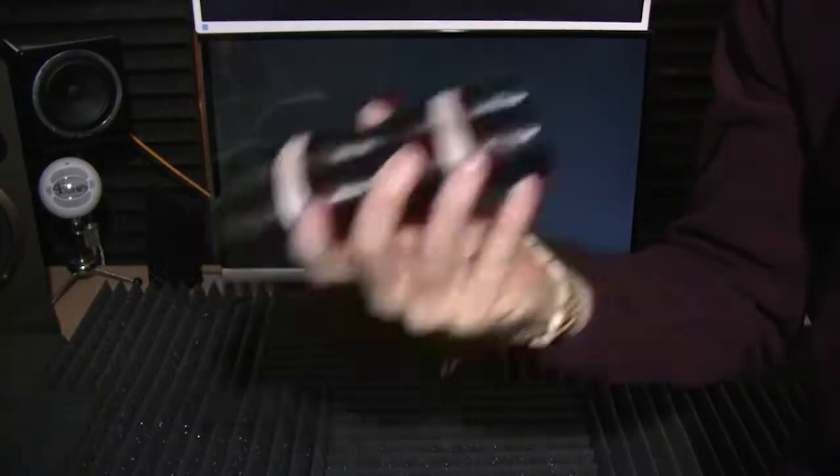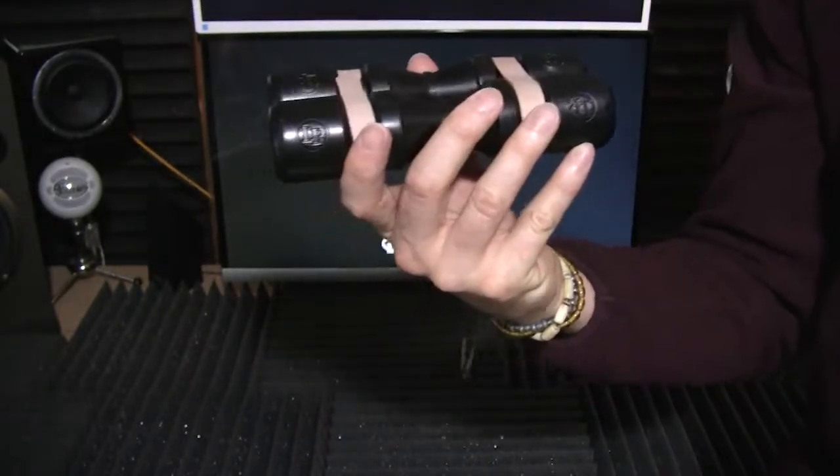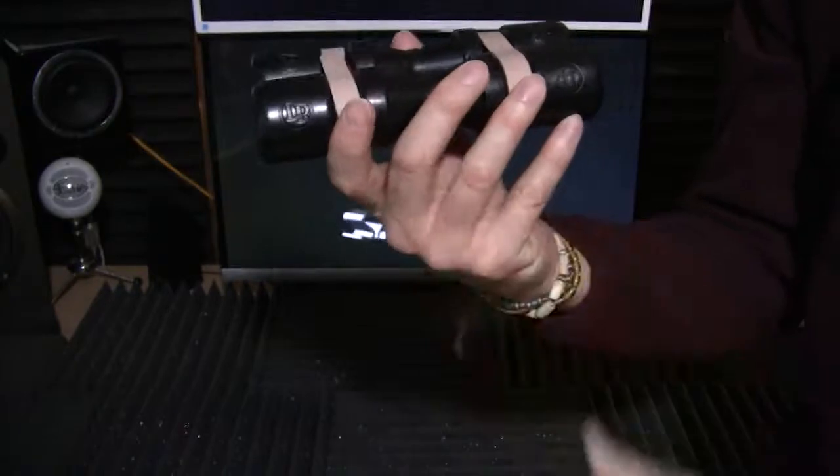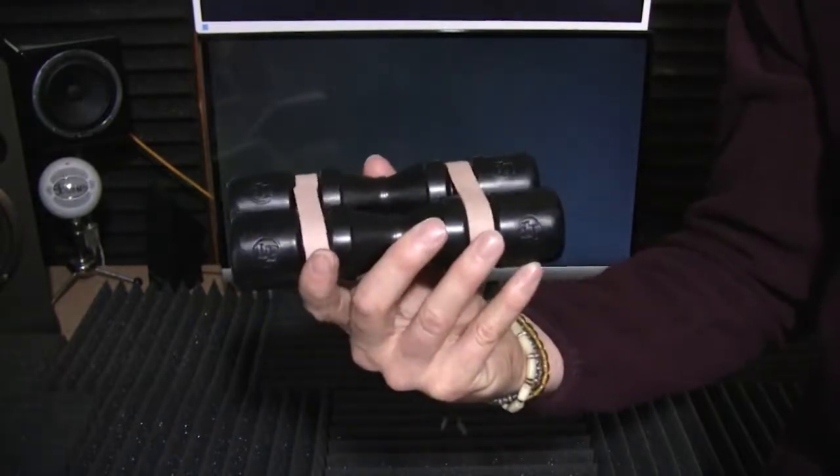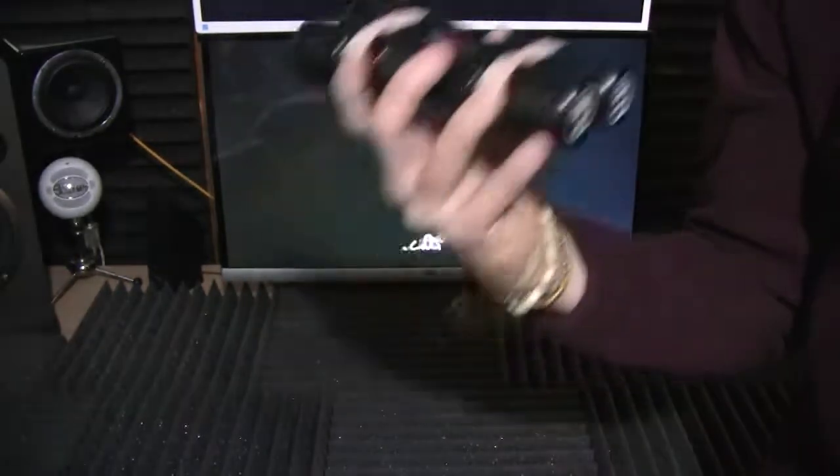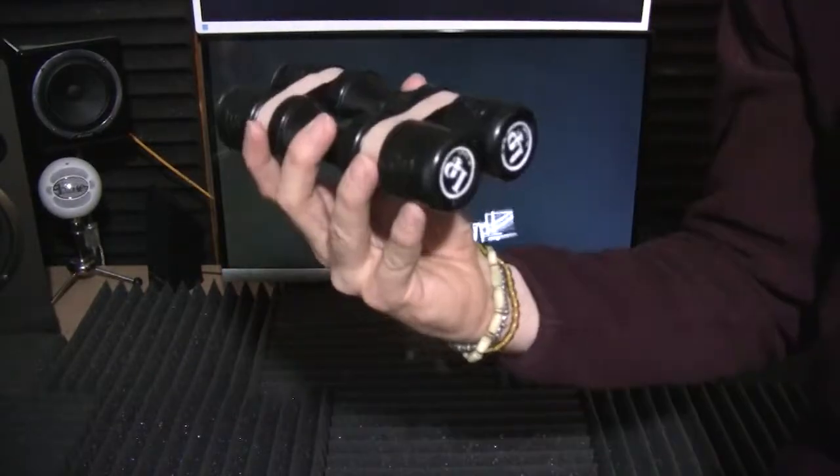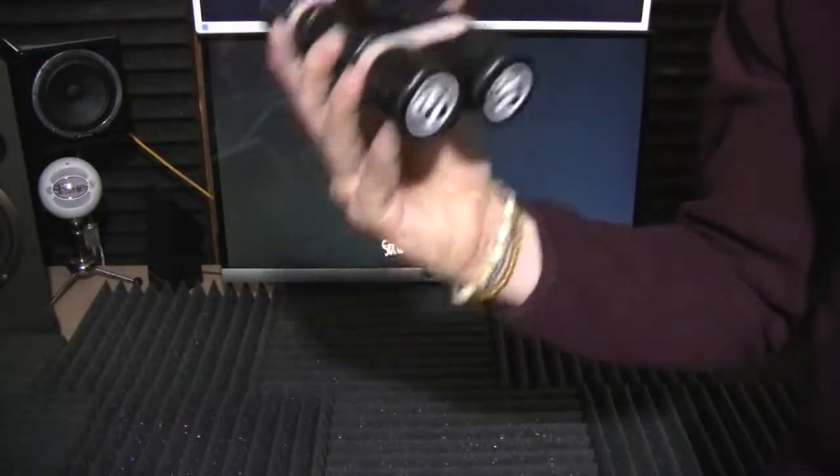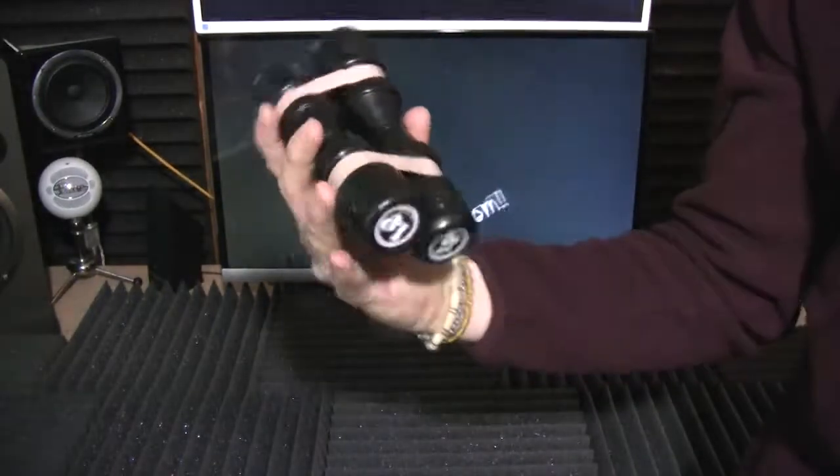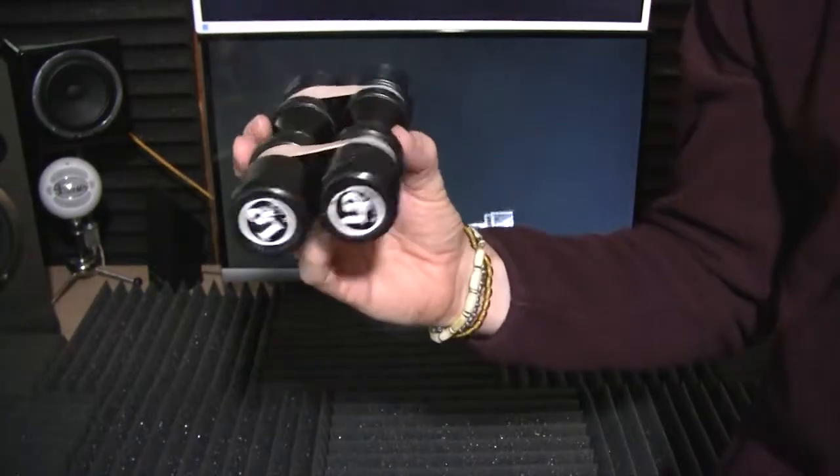Now, if I hold it lengthwise, you get a lot more sustain and whistling around of that sand in there. So it depends on what you want for the song. Which one works best? Which one complements the song better? Maybe somewhere in between holding it at a diagonal? I do that sometimes. So, three very different sounds, all extremely usable and complement so many songs that I've recorded in my studio. I'm sure it can in yours too. The LP professional studio shaker.